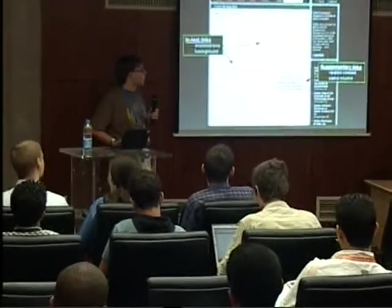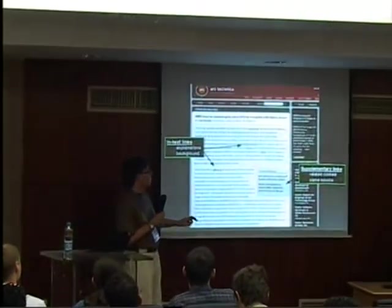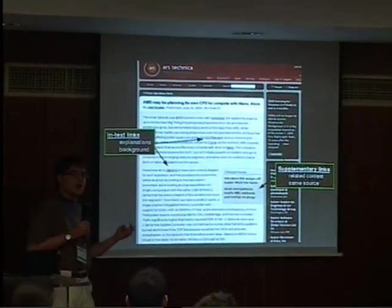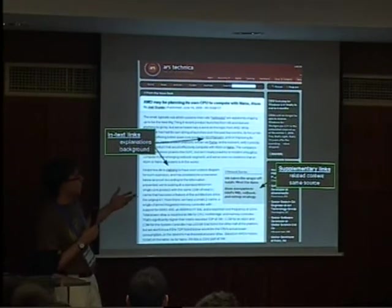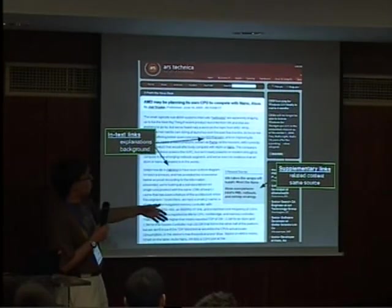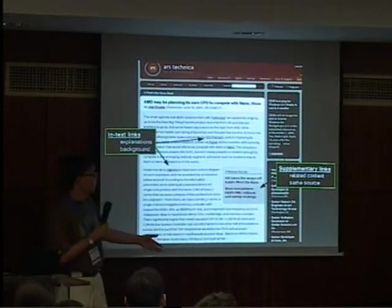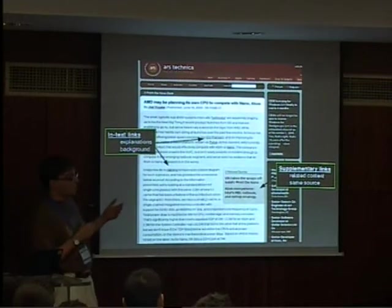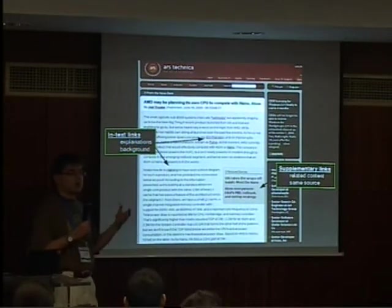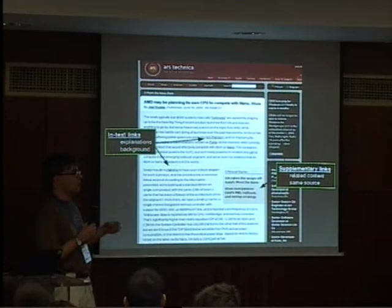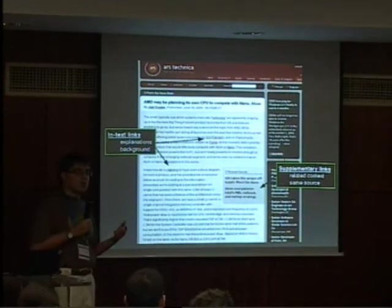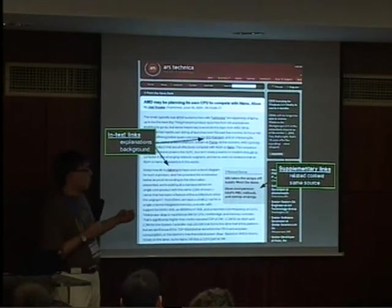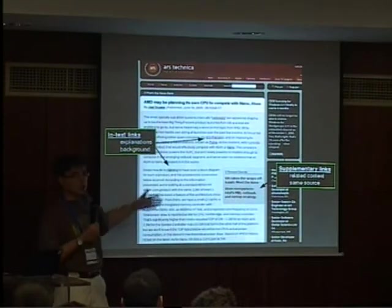We can broadly classify links that appear on this page into two categories. One are supplementary links. These are links that usually have anchors outside the main body of the text — let's say in the sidebar, on the floating body, or maybe somewhere below the text. These links usually point to pages that contain related content, like articles on the same topic or from the same author, and they're usually used to guide the reader to other content after he or she has finished reading the current page.